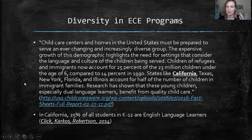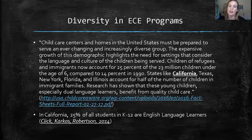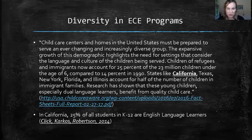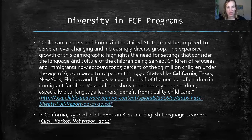In child care centers and homes, we have to be prepared to serve an ever-changing and increasingly diverse group. The expansive growth of this demographic highlights the need for settings that consider the language and culture of the children being served. Children of refugees and immigrants now account for 25% of the 23 million children under age six, compared to just 14% in 1990. States like California, Texas, New York, Florida, and Illinois account for half the number of children in immigrant families. Research has shown that these young children, especially dual language learners, benefit from quality child care — that's from U.S. Child Care Aware.